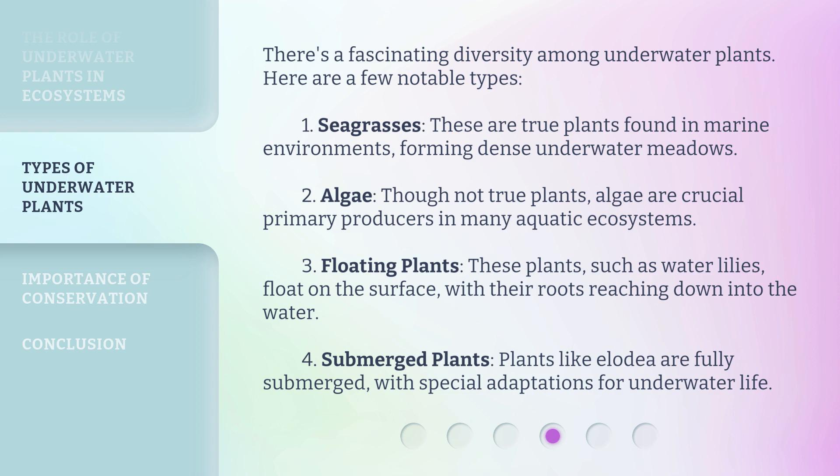Third, floating plants — these plants, such as water lilies, float on the surface with their roots reaching down into the water. Fourth, submerged plants — plants like Elodea are fully submerged, with special adaptations for underwater life.